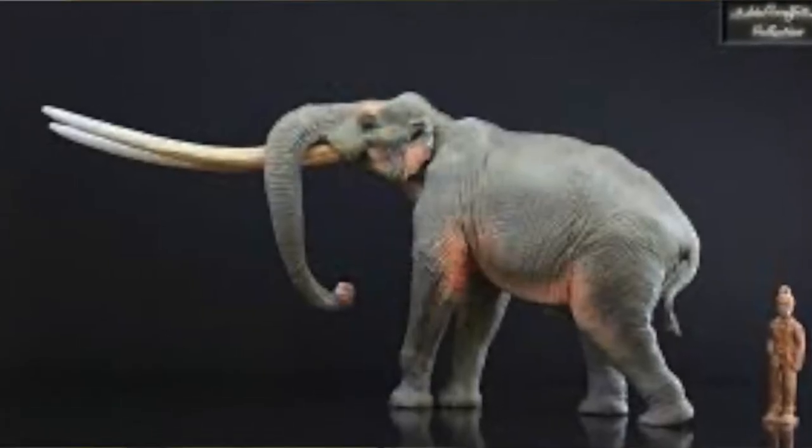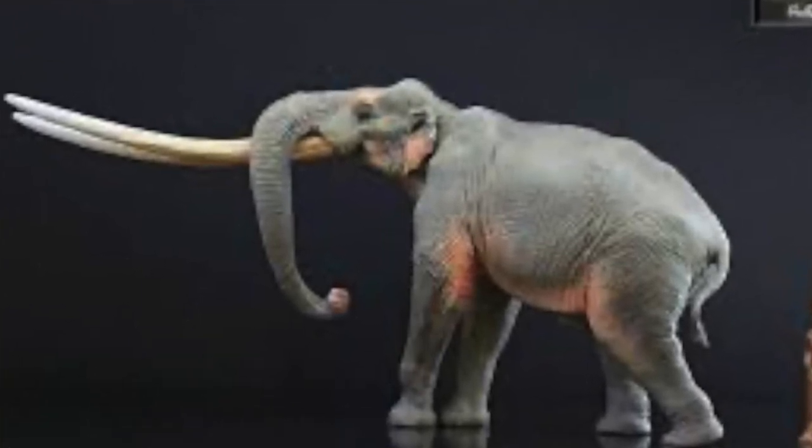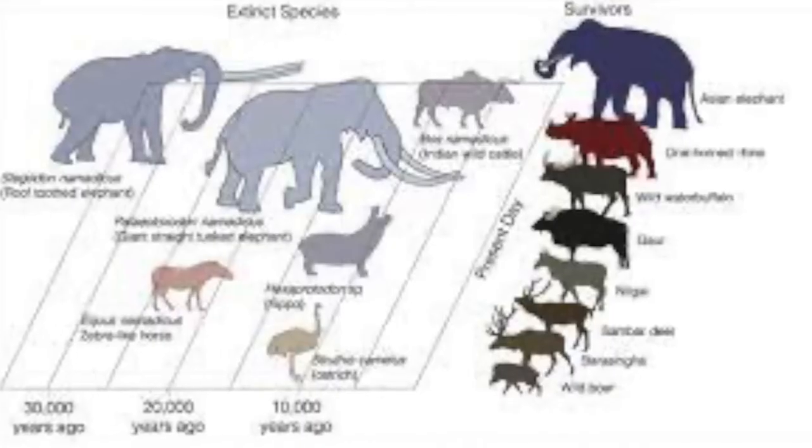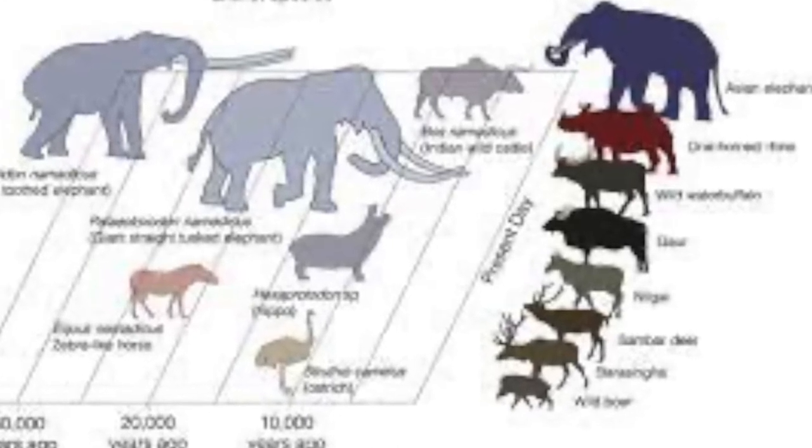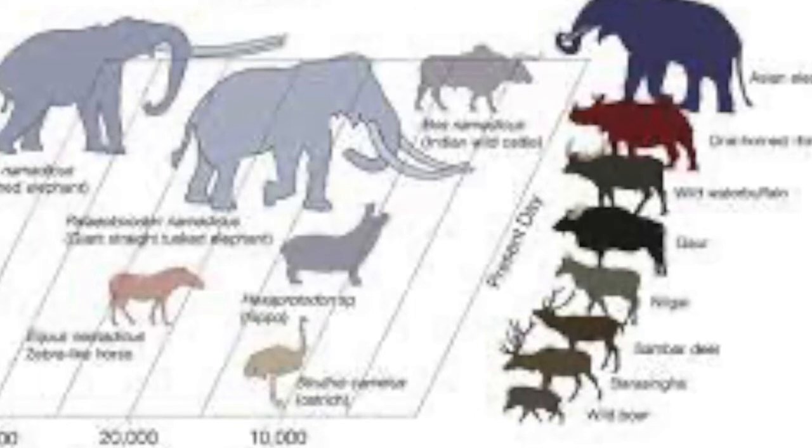Palaeoloxodon outlived Stegodon, at least based on currently available data — we only have three dated sites for Stegodon. It seems Stegodon goes extinct around that time even in parts of China and Southeast Asia, suggesting a global pattern. There isn't good evidence of Stegodon persisting until 4,000 years. Stegodon on islands in Indonesia all seem to go extinct sometime in the Middle Pleistocene.